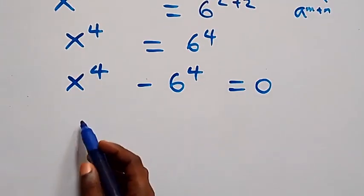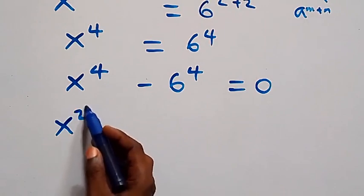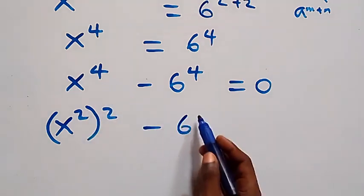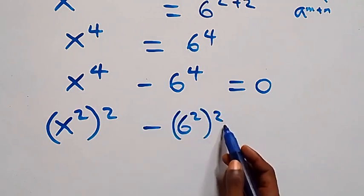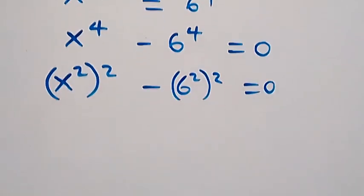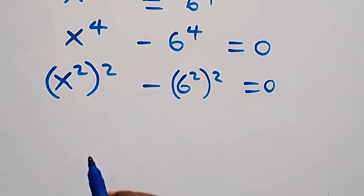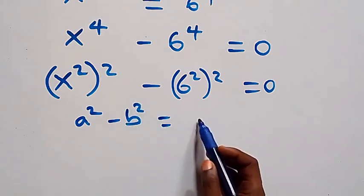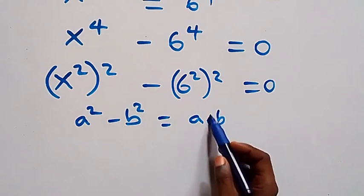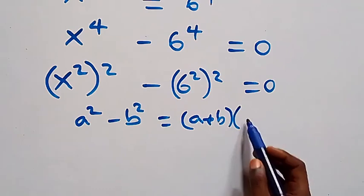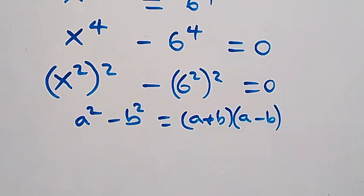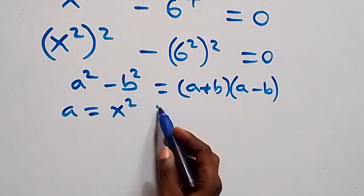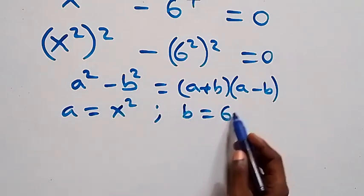This can be written as (x²)² minus (6²)², using the difference of two squares identity: a squared minus b squared is the same as (a plus b) into (a minus b). Here, a stands for x squared and b stands for 6 squared.